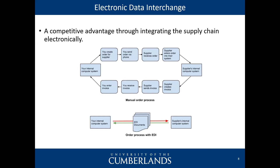EDI — electronic data interchange — is where businesses communicate with businesses via electronic documents, not hand-typed paper invoices. At the bottom of the screen you'll see EDI documents. That's how businesses communicate now. They don't invoice each other by mailing a bill. That whole business process — and that's the next chapter of Bourgeois — is about how business processes are enabled by electronic data interchange. You just couldn't go back to normal business.